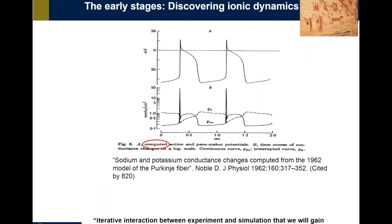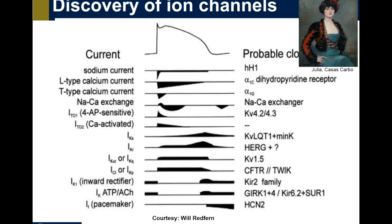This is really clear in the early stages of computer modeling, which Dennis Noble started in the field of cardiac electrophysiology. His early model was a very basic representation of the ionic processes that underlie cardiac behavior — only two conductances, one for sodium and one for potassium — but it was able to provide the action potential. Through the iterative interaction between experiment and simulation, we gained understanding of the ionic mechanisms of electrophysiology, and through a communal effort, we were able to discover all the other ion channels that exist and provide a more accurate representation of these ionic currents.